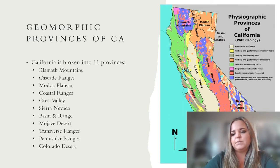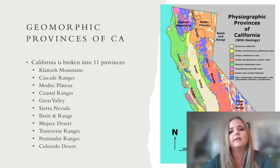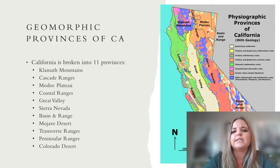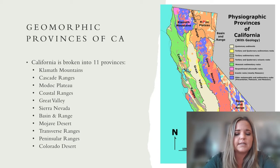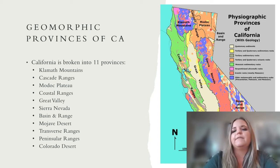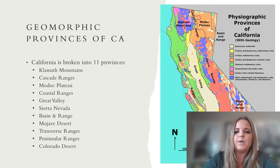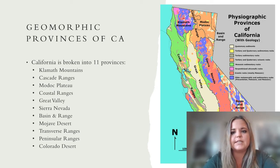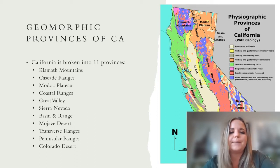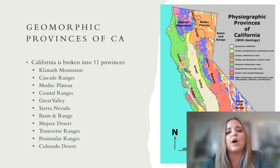We also have some deserts — the Mojave Desert and the Colorado Desert — and some areas with a lot of volcanic remnants. We have the Cascade Range, which hosts Mount Shasta and Mount Lassen, and the Modoc Plateau, which is a vast landscape of basaltic lava. We also have the Basin and Range in a couple of spots: northeastern California near Tahoe and on the eastern side of the Sierra Nevada. The Klamath Mountains are in the northwestern corner. The more colors you see on the map, the more complicated the geology, meaning more different rock types.